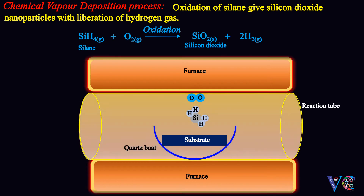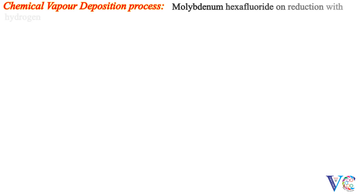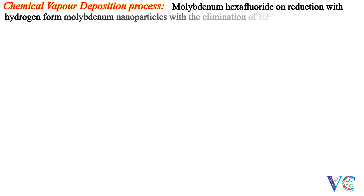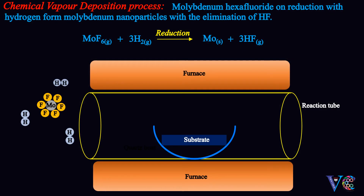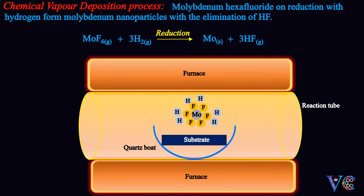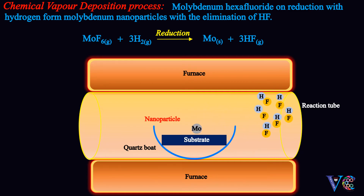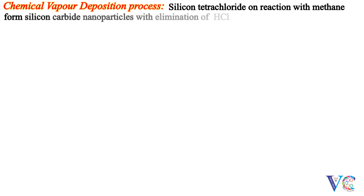Silane undergoes oxidation at high temperature to form silicon dioxide nanoparticles with the liberation of hydrogen gas. Molybdenum hexafluoride on reduction with hydrogen forms molybdenum nanoparticles with the elimination of HF. Silicon tetrachloride on reaction with methane forms silicon carbide nanoparticles with the elimination of HCl.